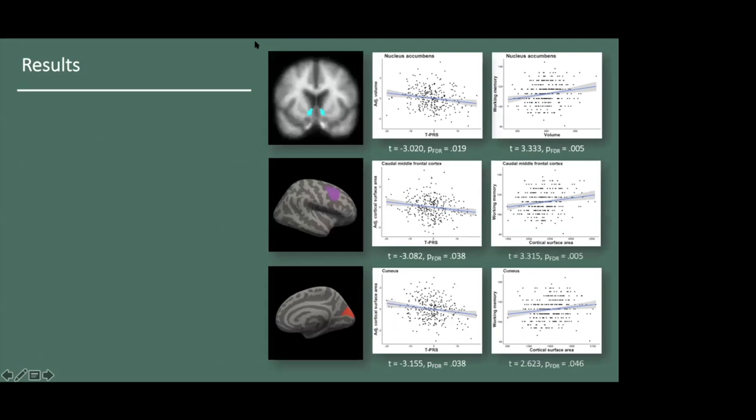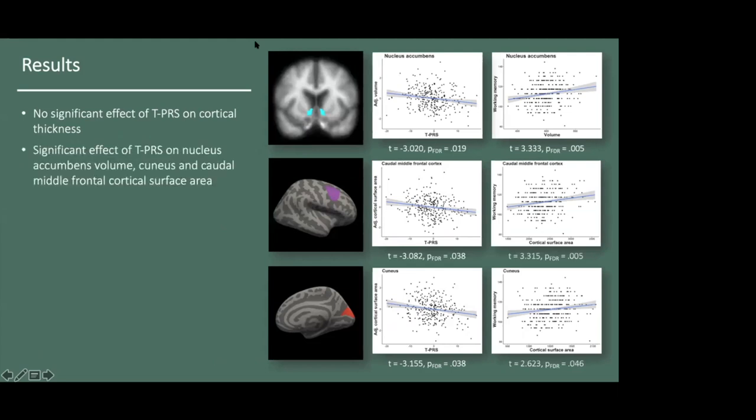So what did we find? We did not identify a significant main effect of TPRS on cortical thickness. We did, however, identify significant main effects of TPRS on volume in the nucleus accumbens and surface area in the caudal middle frontal cortex and in the cuneus.